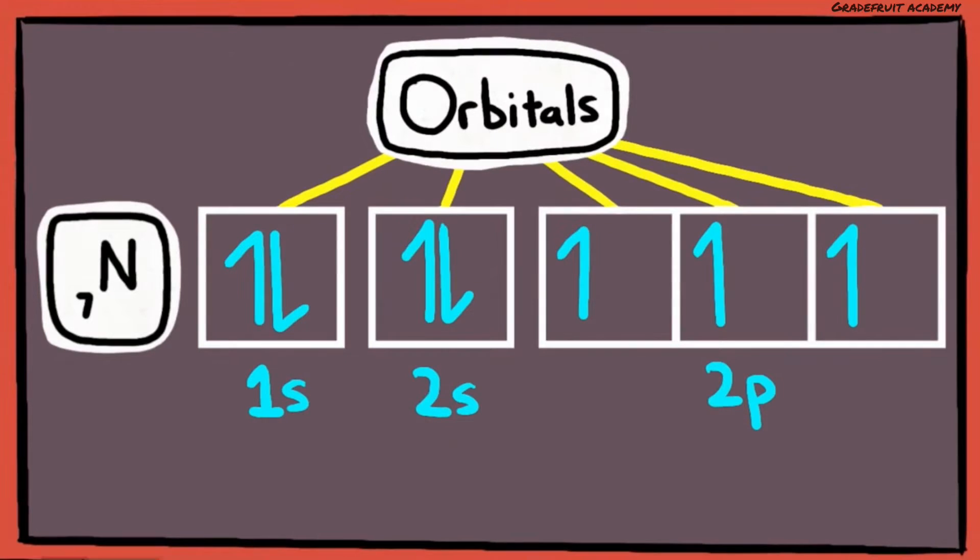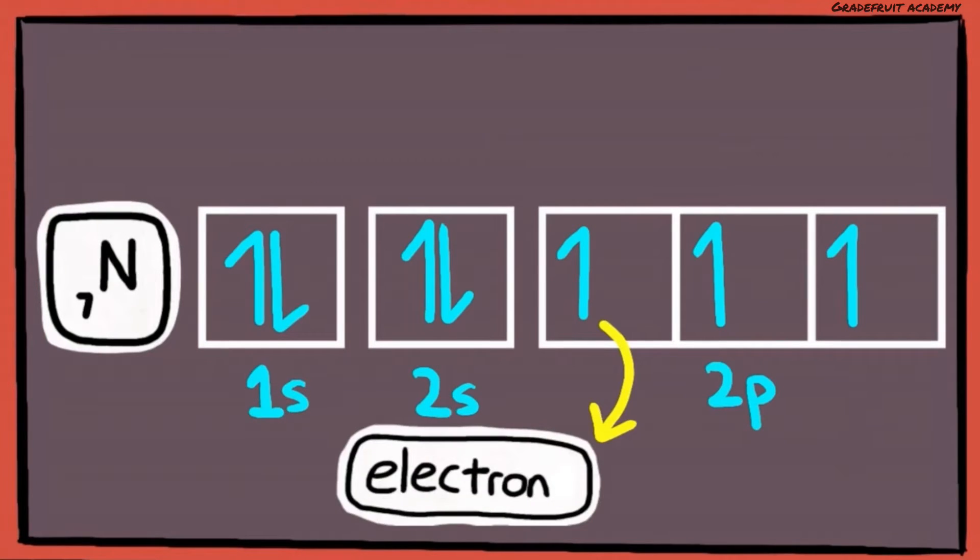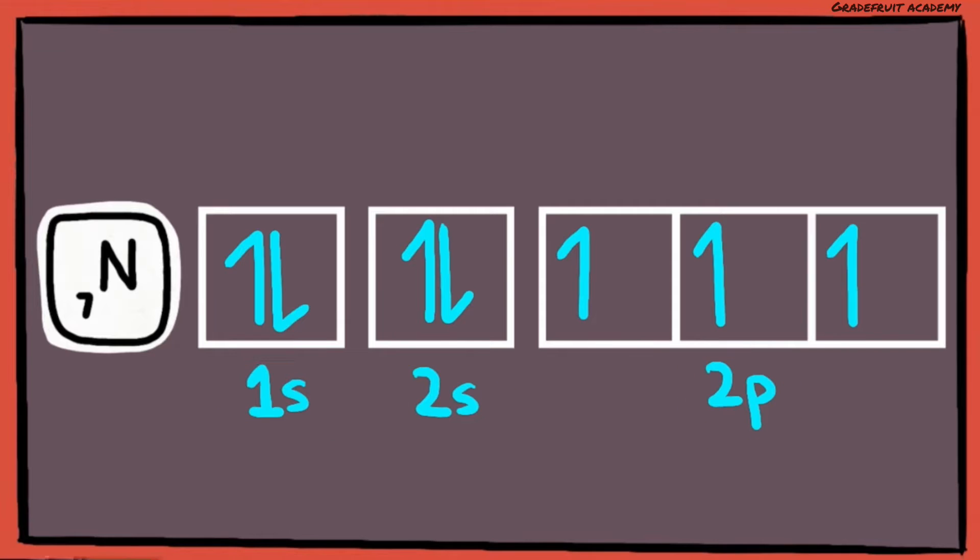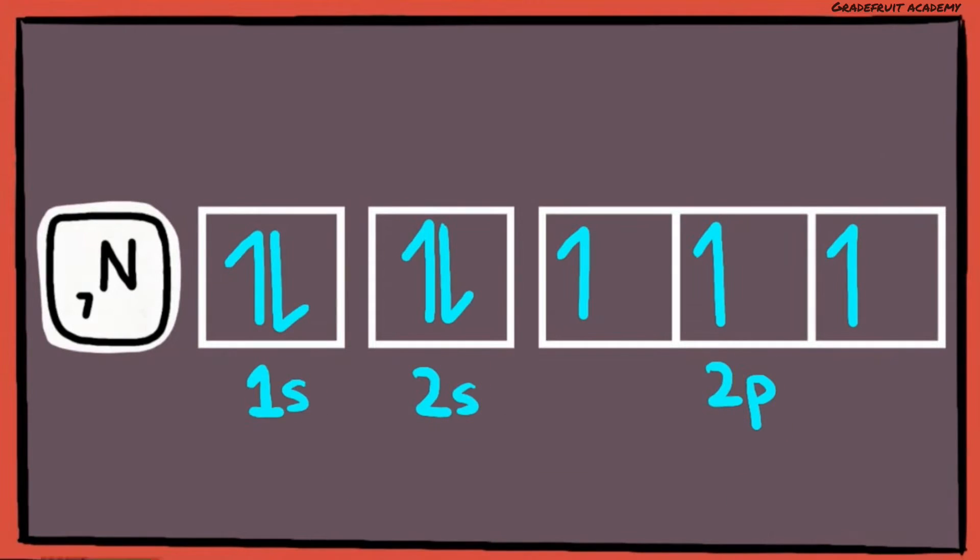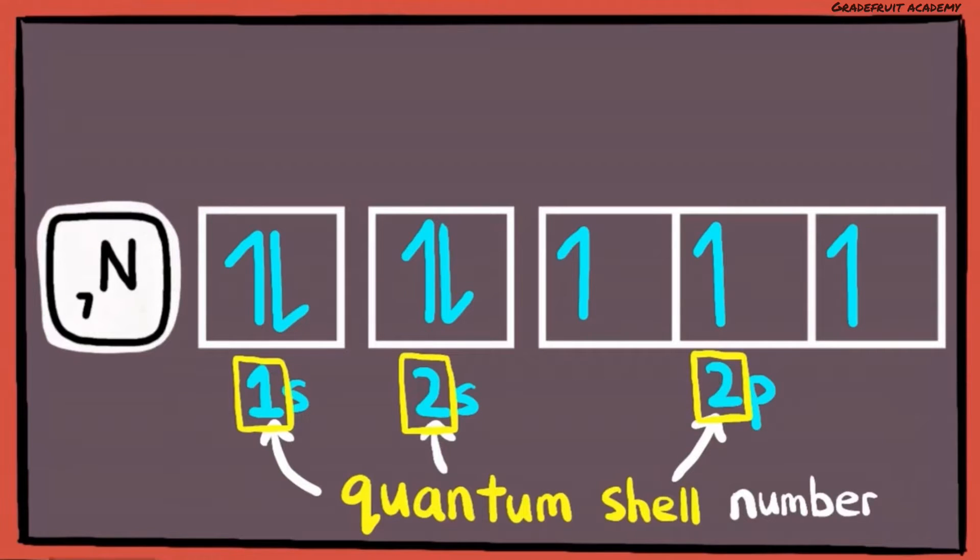These boxes represent orbitals and each half arrow represents one electron. Underneath these boxes are letters which will tell you the type of orbital and the number tells you which quantum shell the orbital is in.